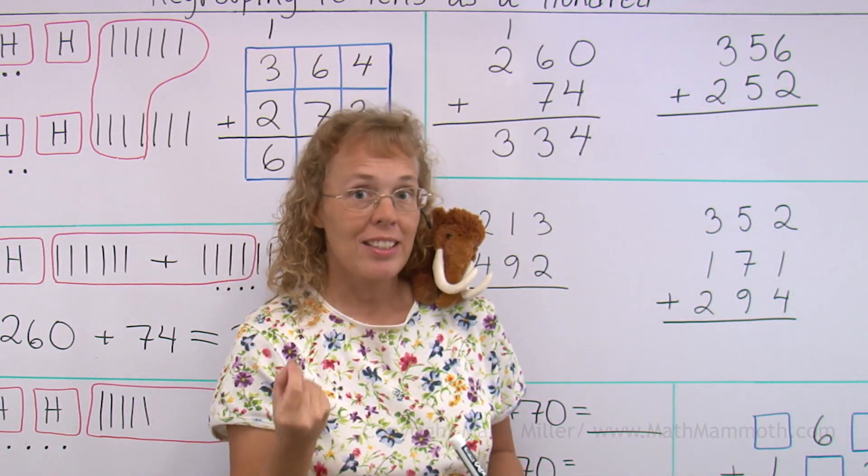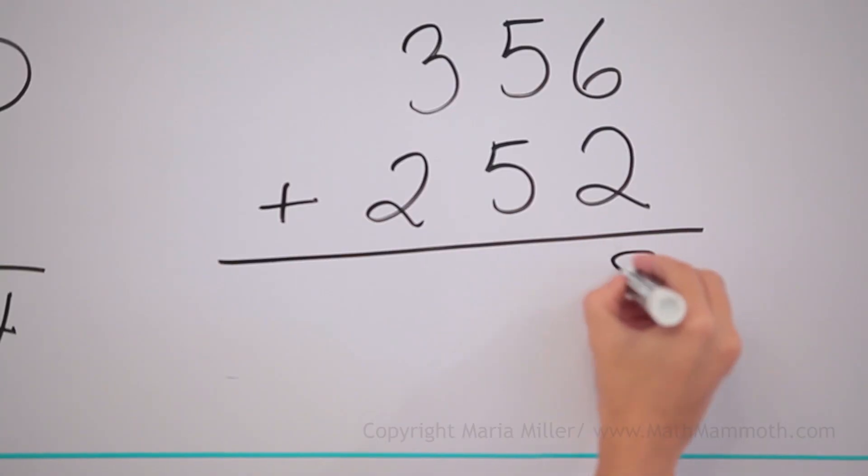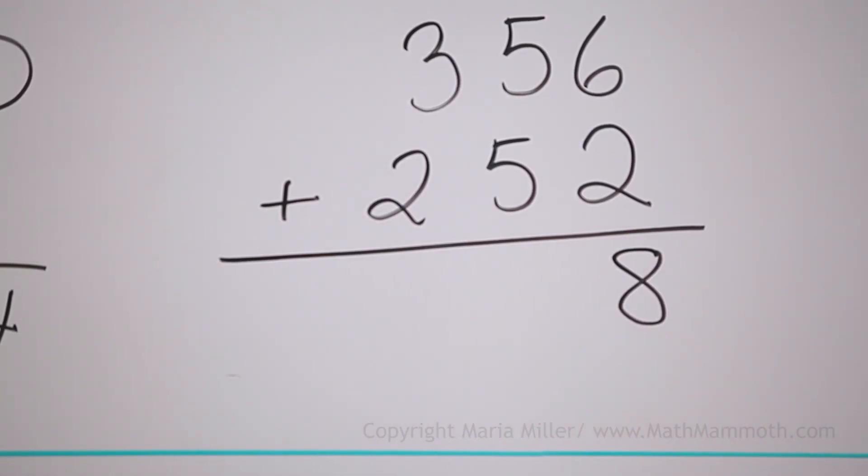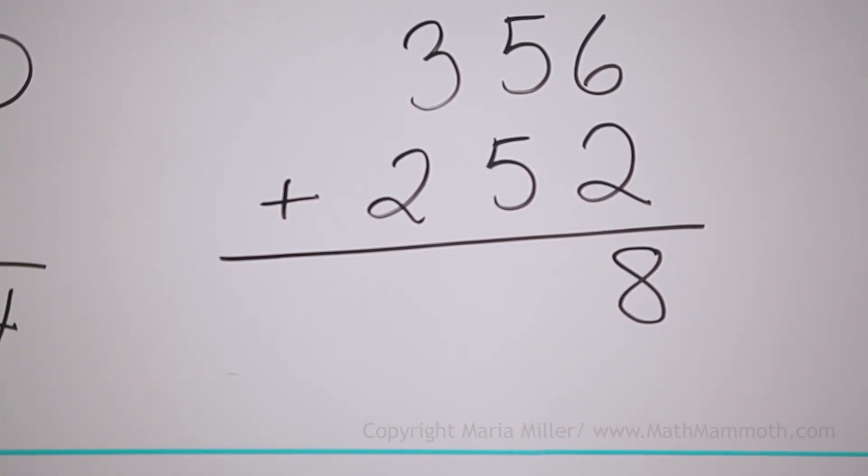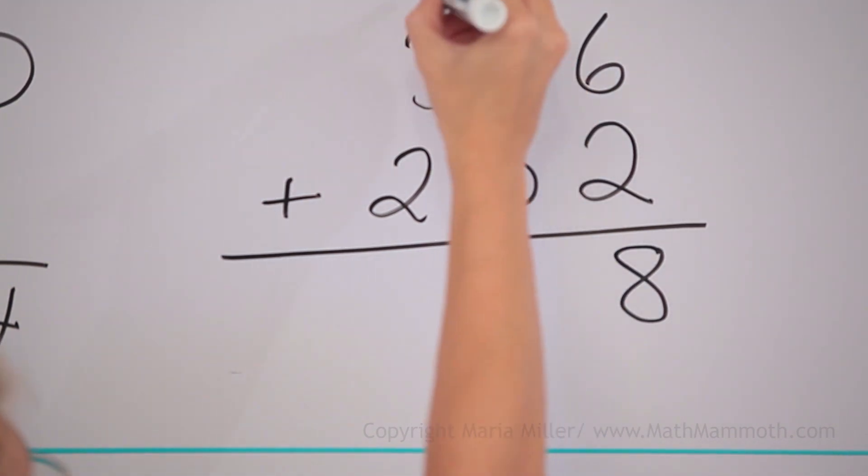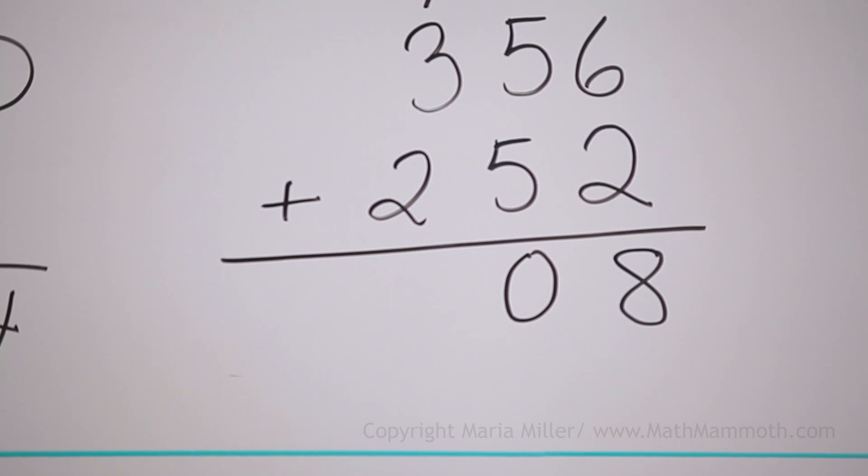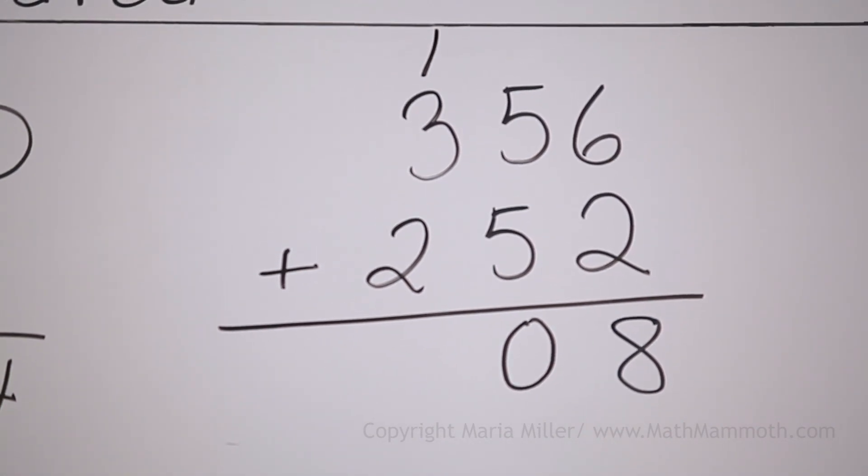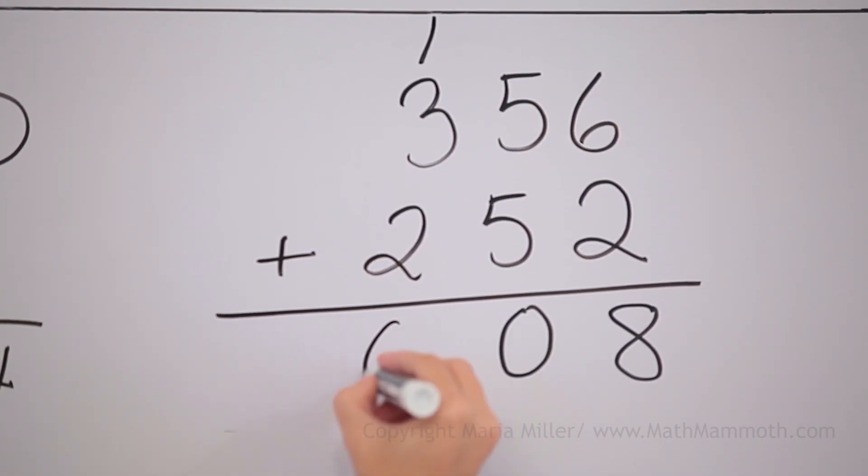First add the ones, six plus two. Then the tens, five plus five equals ten. So we get ten tens, and ten tens means we get one hundred. And we are left with zero tens over here, and then the hundreds, we get six.